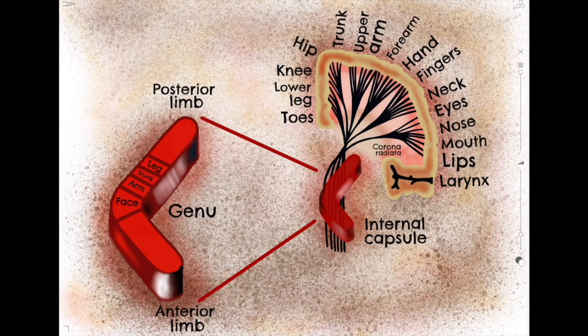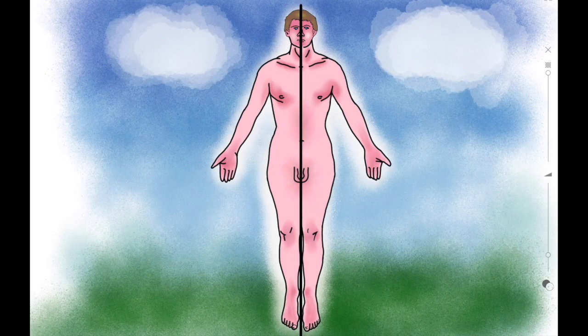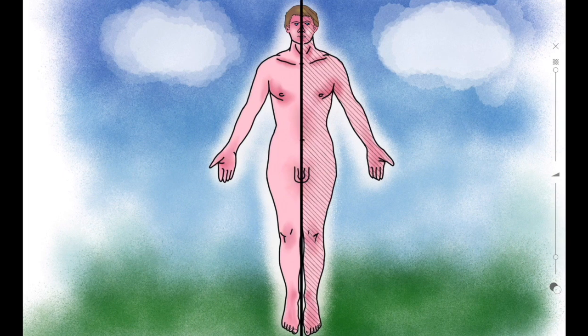In order to talk about internal capsule stroke specifically, let's first cover stroke in general. A stroke is a medical clinical term for the onset of neurological symptoms or signs that last for over 24 hours and are due to a vascular cause. Strokes can be divided into two main types: ischemic strokes and hemorrhagic strokes. In an ischemic stroke, blood supply to an area of the brain is occluded due to a thromboembolism or an in-situ thrombosis of a cerebral vessel. In a hemorrhagic stroke, there is bleeding into the brain tissue, often caused by the rupture of an aneurysm. The neurological symptoms will depend on the area of the brain that has been affected.